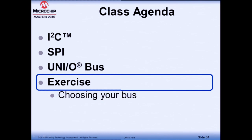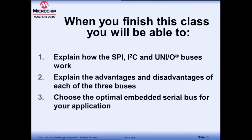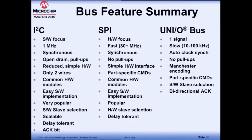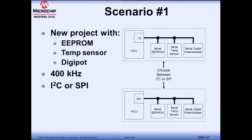We went through the I2C, SPI, and UNIO buses. Let's move on to an exercise in which we choose a bus for particular applications. In scenario one, we have a new project with an EEPROM, a temperature sensor, and a digital potentiometer, supposed to run at 400 kHz. Will we use I2C or SPI?